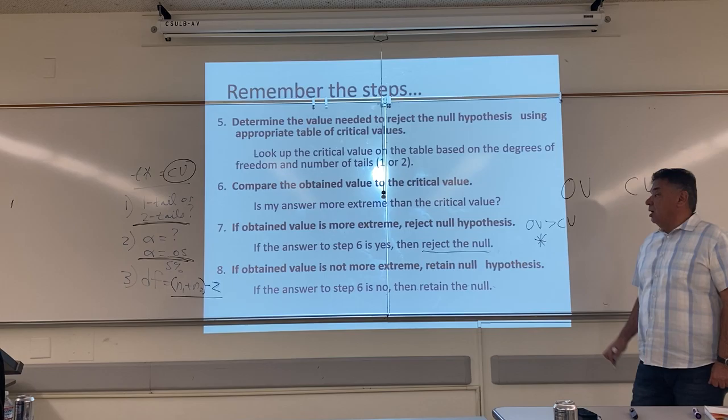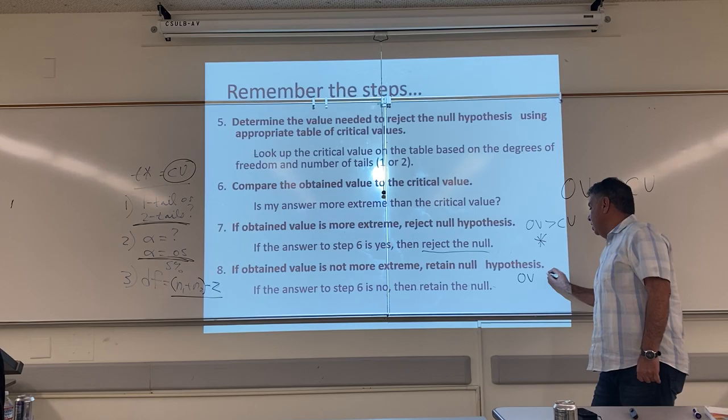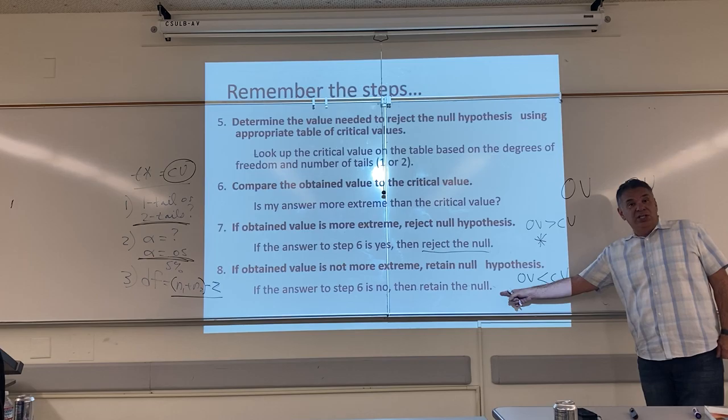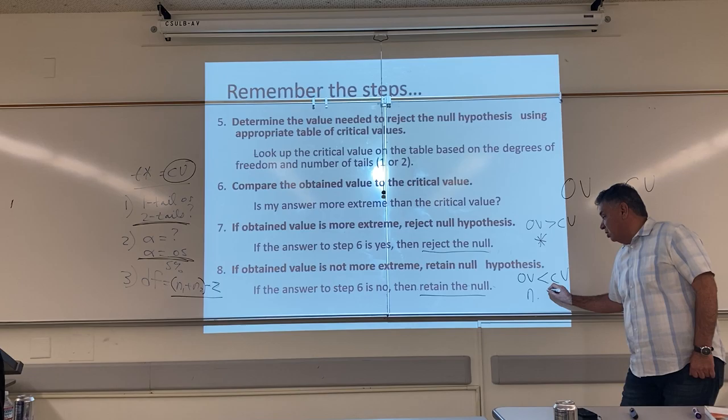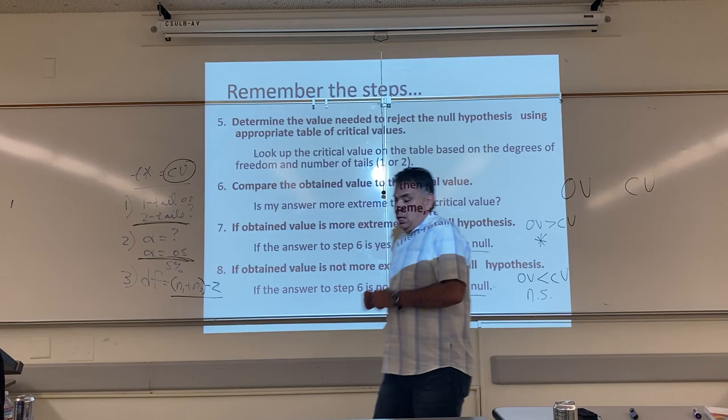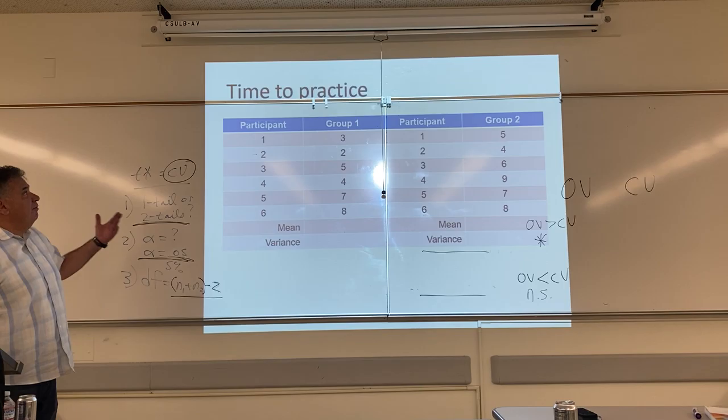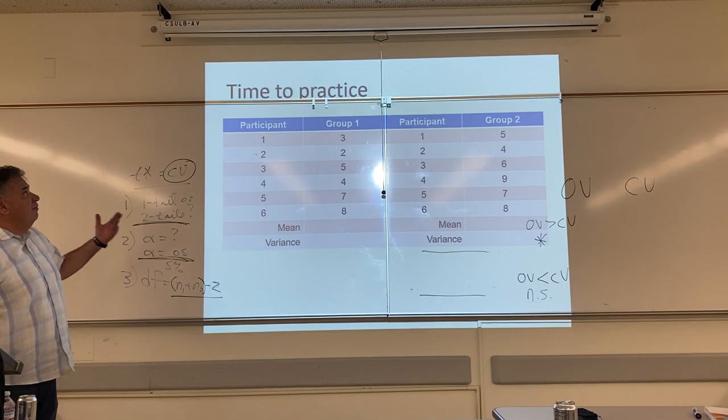To paraphrase: when the OV is more extreme than the CV, the results are significant — your answer gets the asterisk, the star — and your decision is to reject the null hypothesis. But if the OV is not more extreme than the CV, so it's less or closer to zero — the absolute value of the OV is less than the critical value — your decision is to retain the null hypothesis because your answer was non-significant, marked N-S.